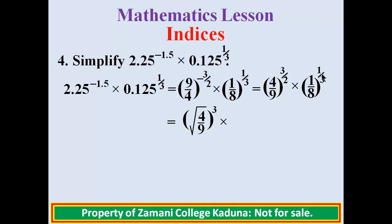For the second term, the denominator is 3, so we take the cube root of 1 over 8. Since the numerator is 1 we don't need to write it raised to power 1, since any number raised to power 1 is that number.